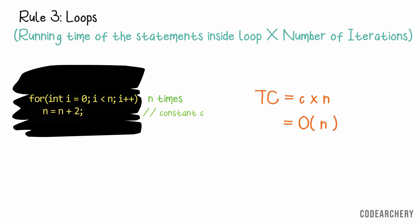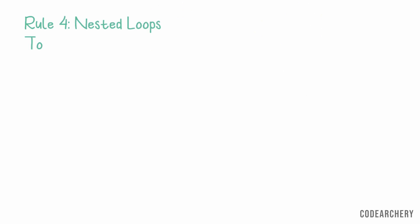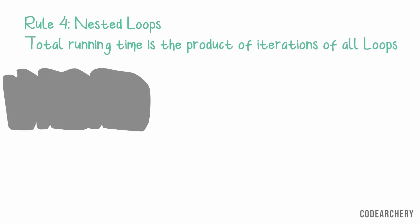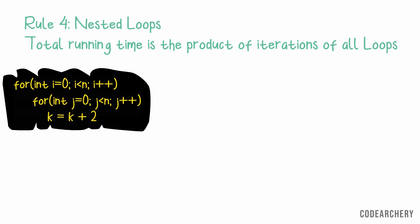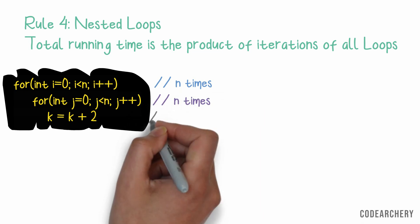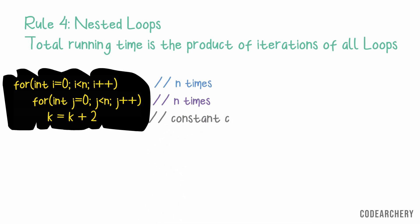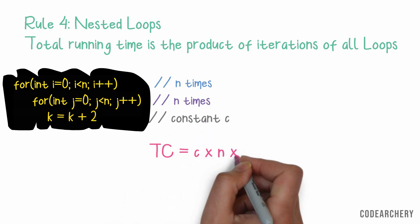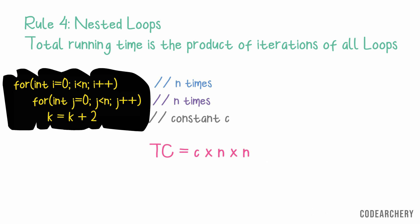Now, the next rule, rule number 4, is for nested loops. So, the total running time is the product of all iterations of all loops. That means we multiply the iterations of each loop. And that gives us the total complexity. For example, here we have a nested loop. So, the outer loop iterates n times. And the inner loop also iterates for n times. And we have one addition statement which is constant. So, time complexity is going to be c multiplied by n which is outer loop multiplied by n which is inner loop. So, which is equal to n square as we ignore constants. So, our time complexity is n square.